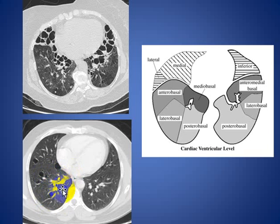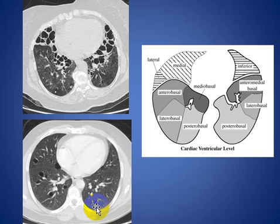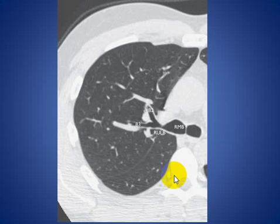The remaining area here is the medial segment of the right lower lobe. On the left side, we also divide into three parts: the upper third is the anterior segment, the middle third is the lateral segment, and the lower third is the posterior segment. Note that there is no medial segment in the left lower lobe.